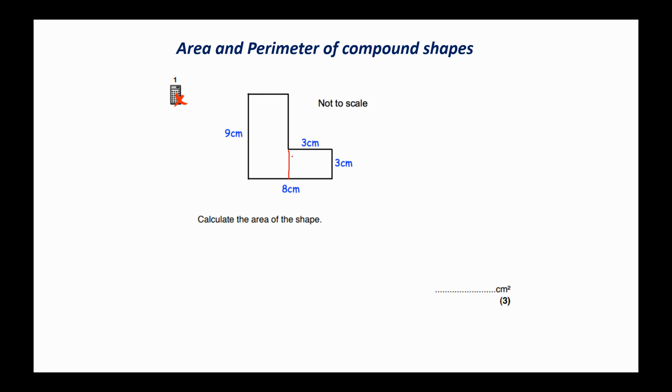Now if we think about the rule we have for the area of rectangles, we're going to multiply the length by the height. So we're going to go 3 times 3 which will give us 9 cm squared. Remember it's area so cm squared.